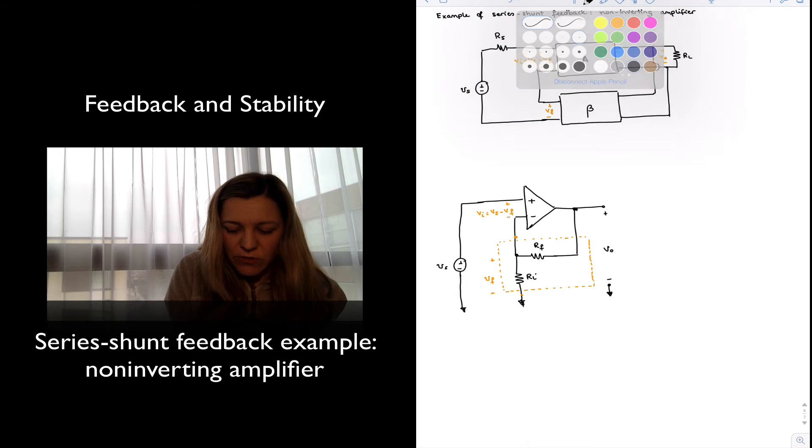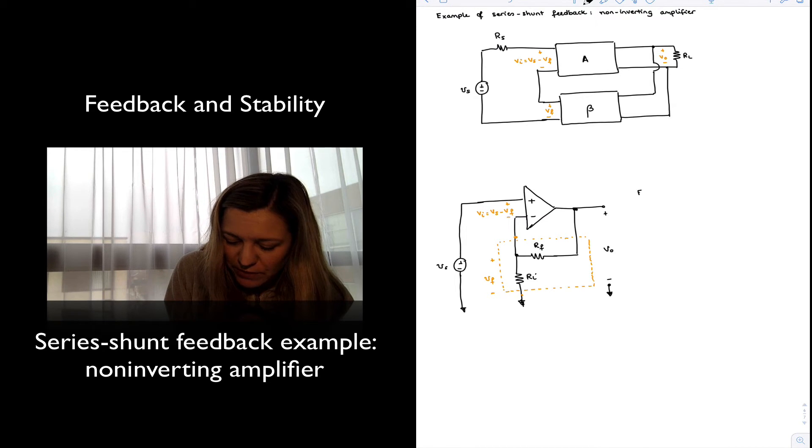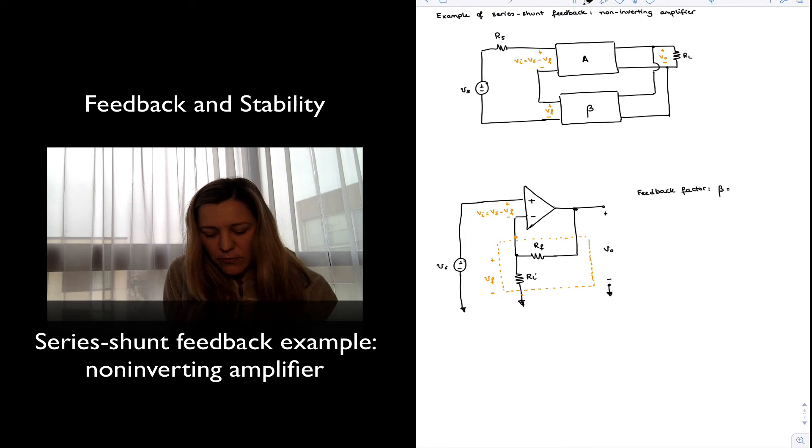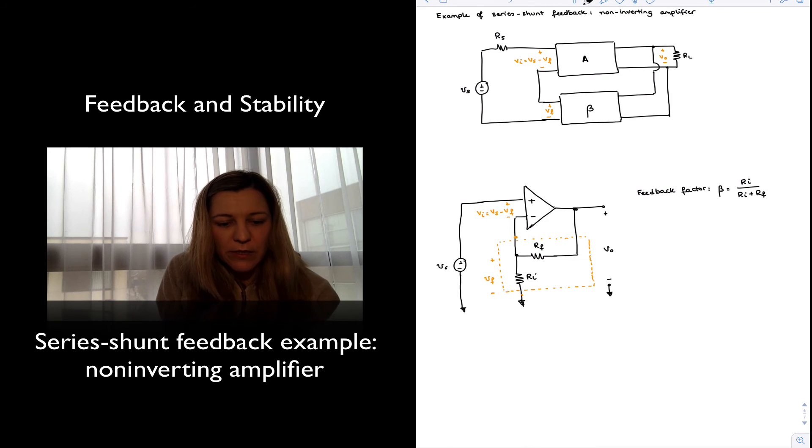So let's take a look at how the different parameters for a standard or general feedback circuit apply here. First of all, we have our feedback factor, beta. And in this case, we can see that beta is going to be the gain of the feedback network, essentially the ratio of Vf to Vout. And we can see that in this case, it's just the result of voltage division between RF and RI. And so Vf is going to be equal to Vout times RI over RI plus RF. So that is my feedback factor or the gain of my feedback loop.